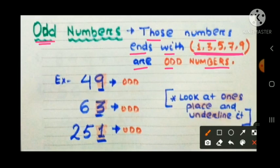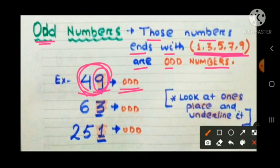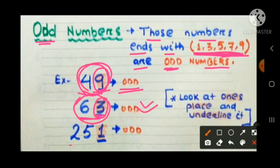Here, check 49 — in the ones place, 9 is there, and 9 belongs to the odd digits group, so 49 is an odd number. Now check 63 — 3 is in the ones place, and 3 belongs to the odd group, so 63 is an odd number. For 251, 1 is present in the ones place, so 251 is also an odd number.